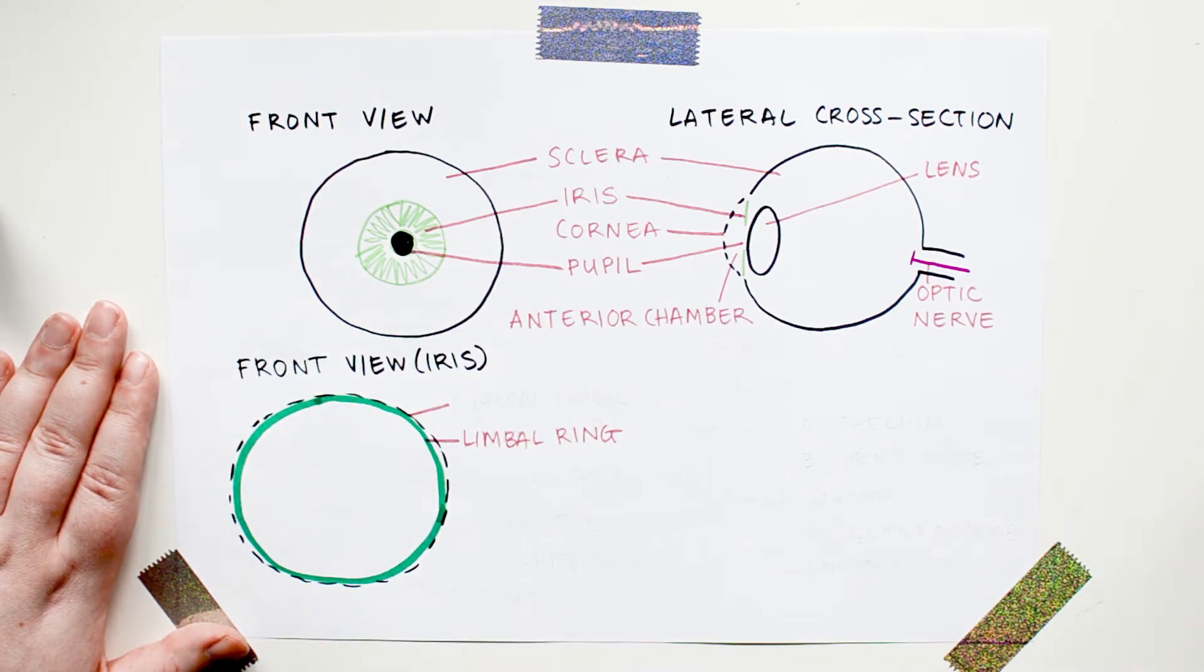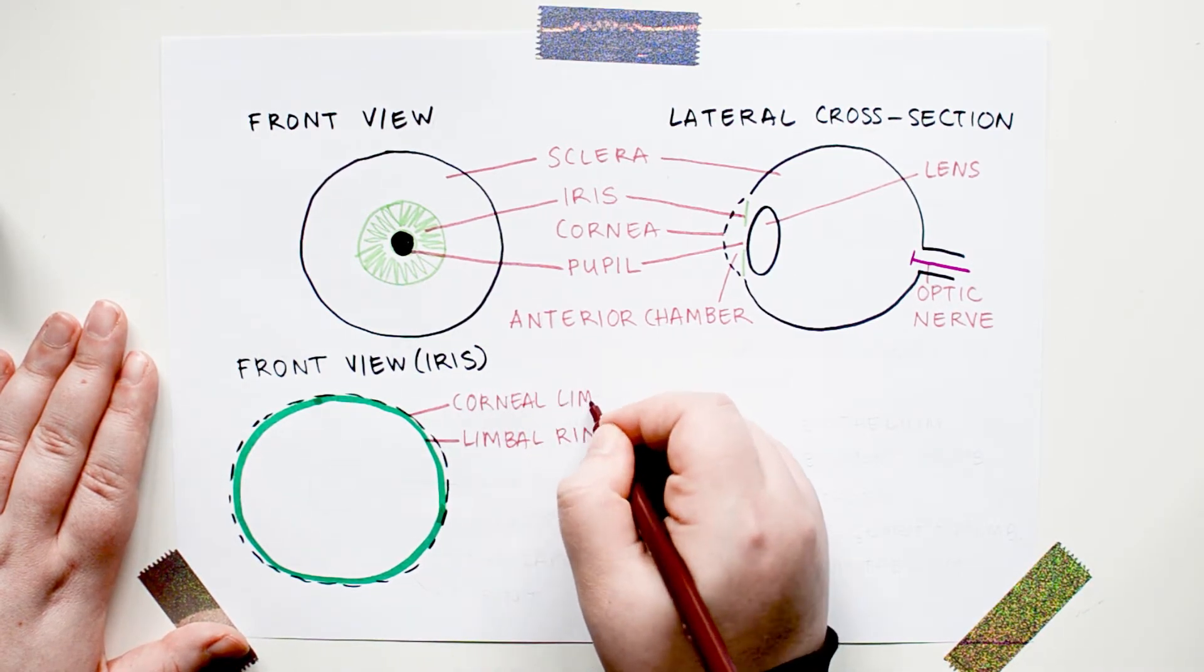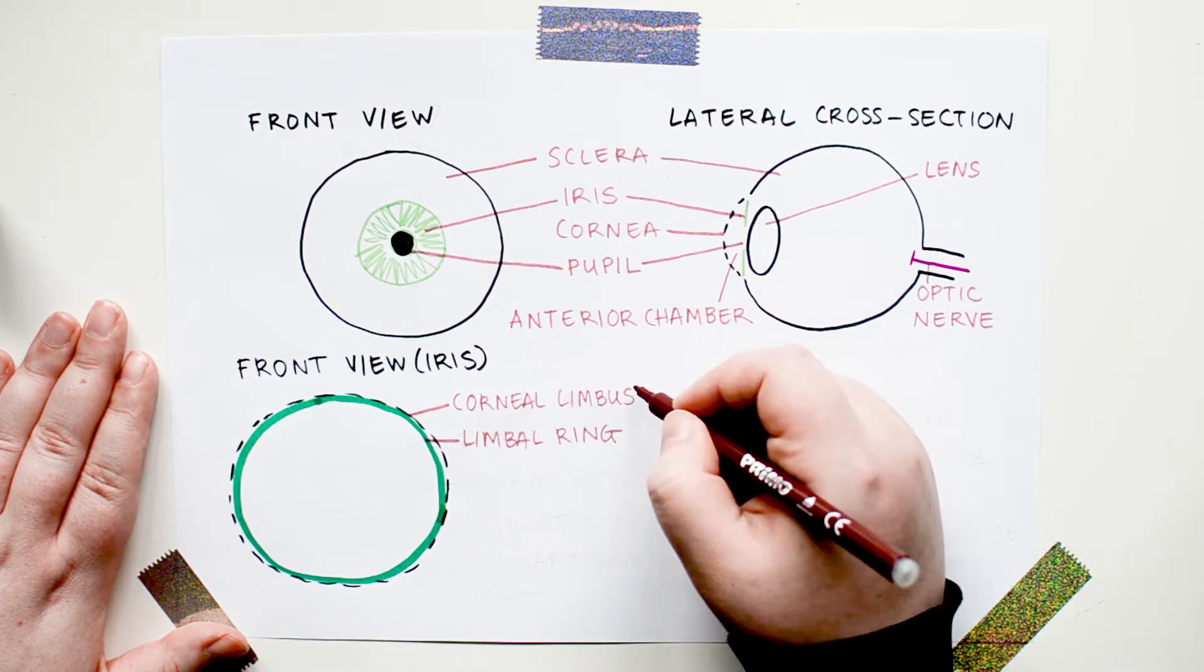The iris itself is not darker in that area, it just looks darker because of an optical illusion caused by light refracting in a somewhat weird way in this area called the corneal limbus, where the transparent cornea, which covers your iris, meets the opaque sclera, which covers the rest of the eye.